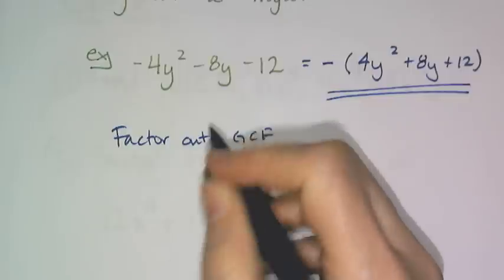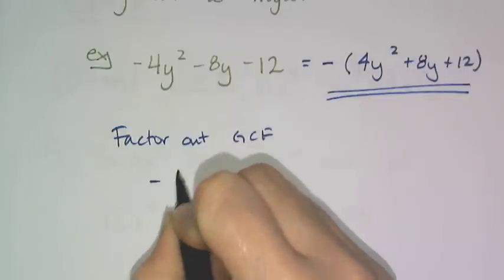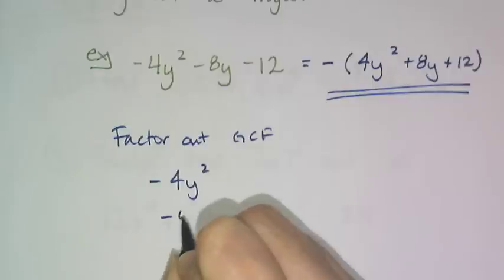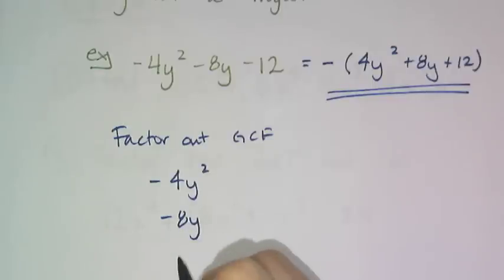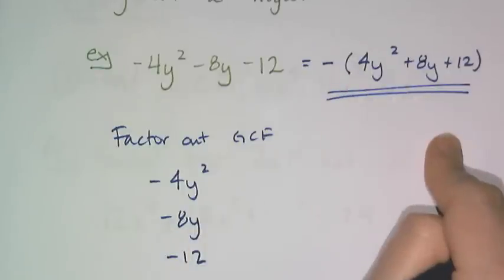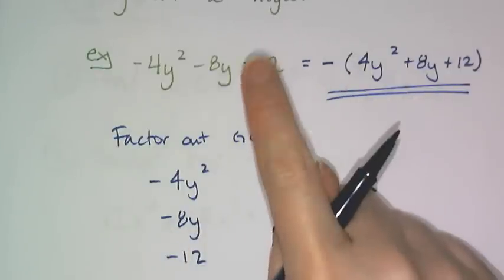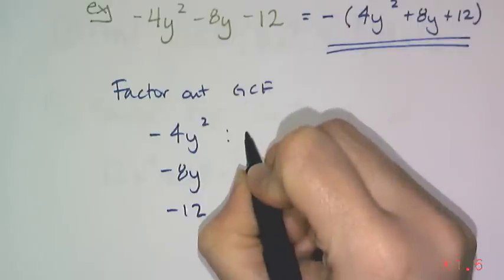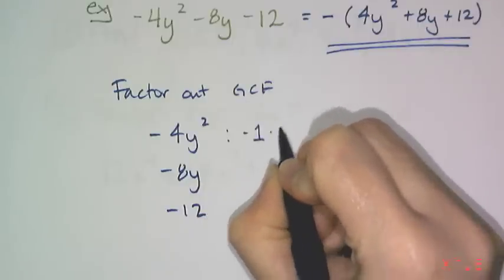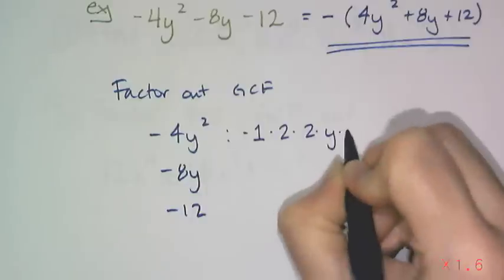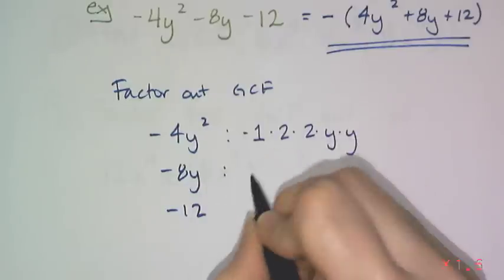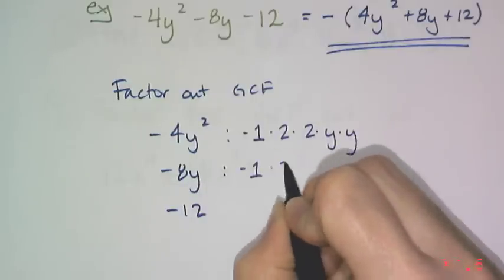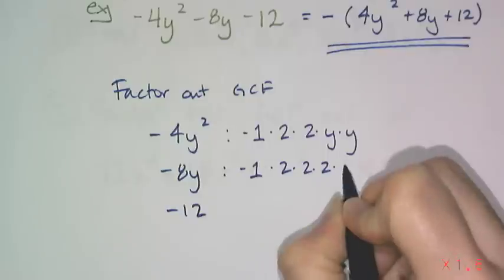So now let's actually factor out the GCF, and the signs really don't matter when you factor out the GCF. You just have to remember what sign combination you're using. So I can either use the negative versions or the positive versions. I just have to make sure the final answer has signs that work out. And so if I want to prime factorize this, it's like I have a negative 1, a 2, a 2, a y, and a y. If I expand it out, and I have a negative 1, a 2, a 2, and a 2, and a y.